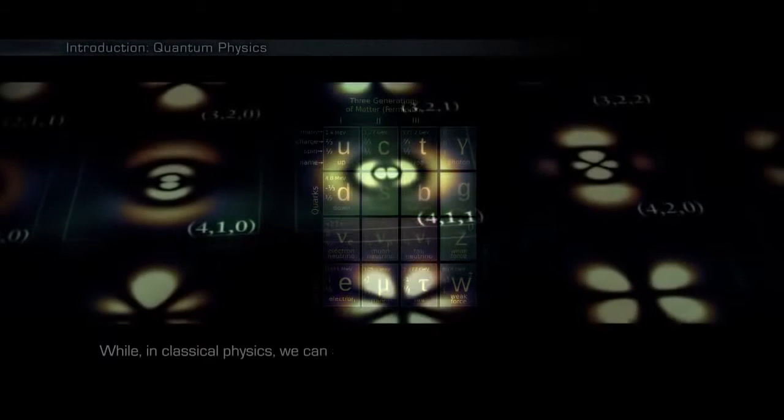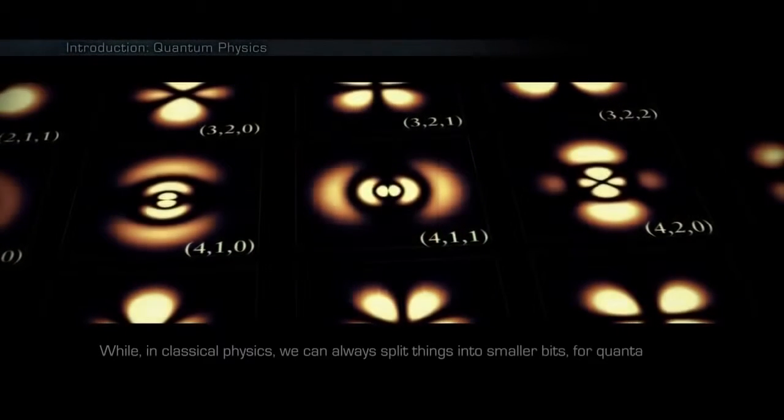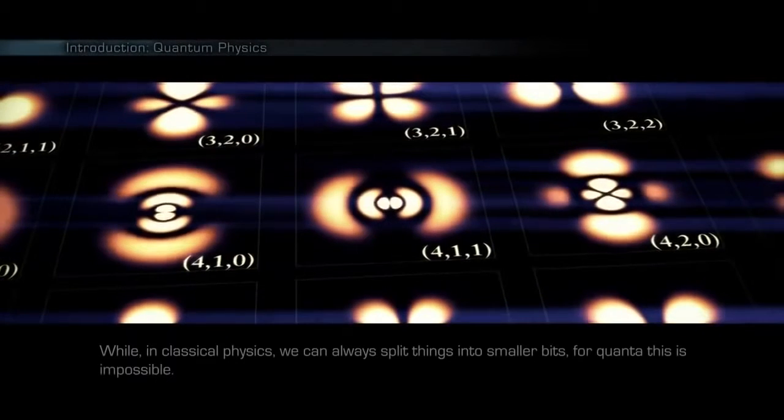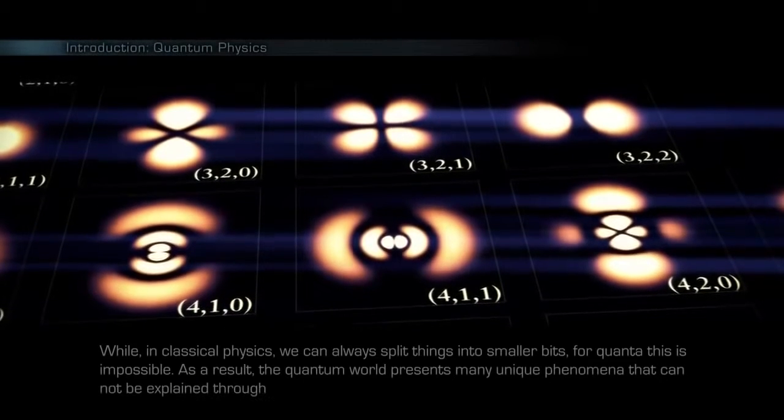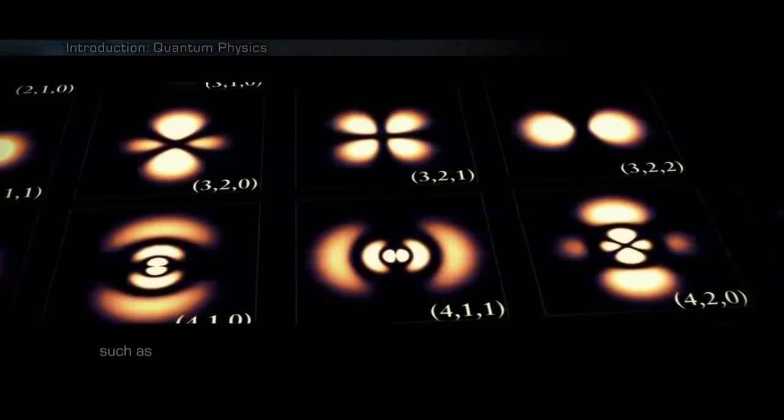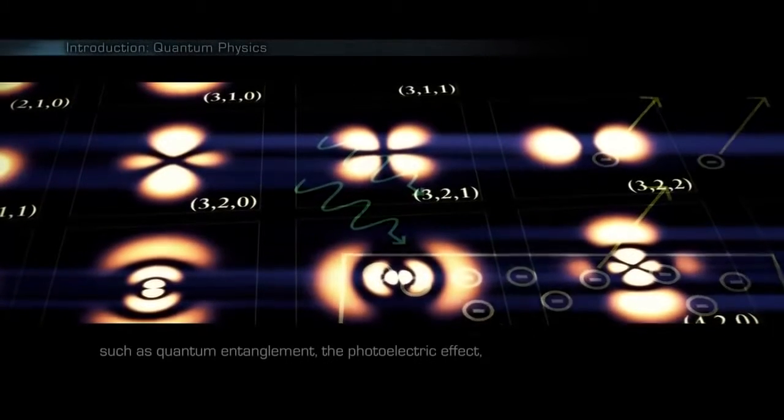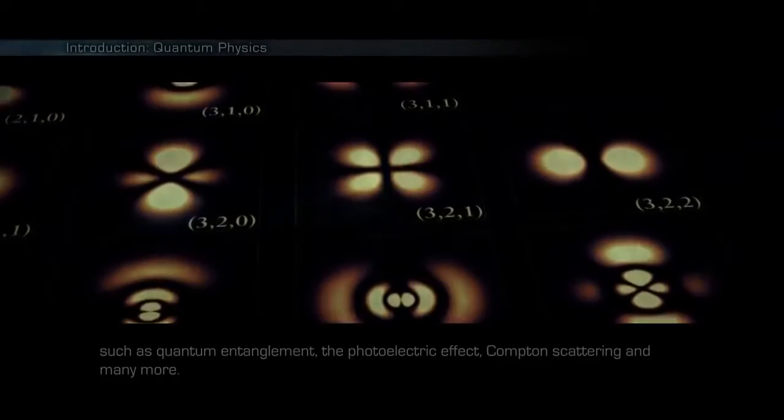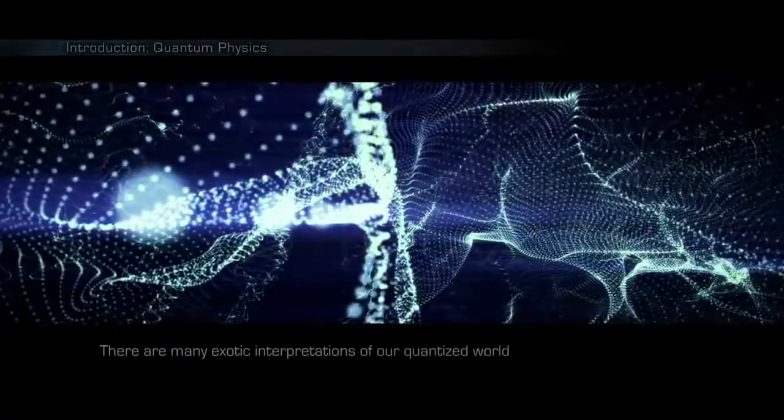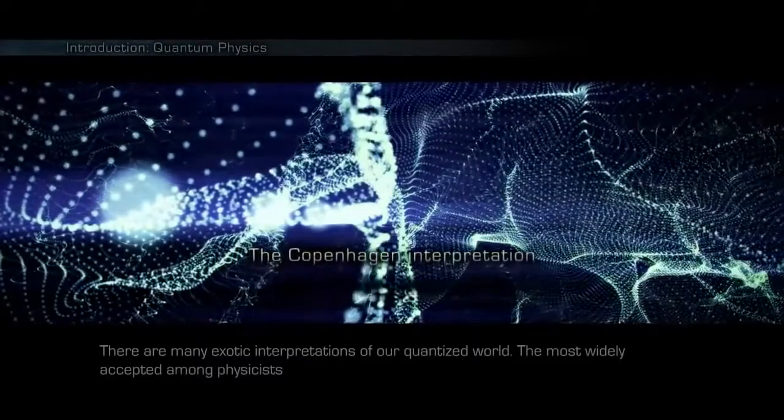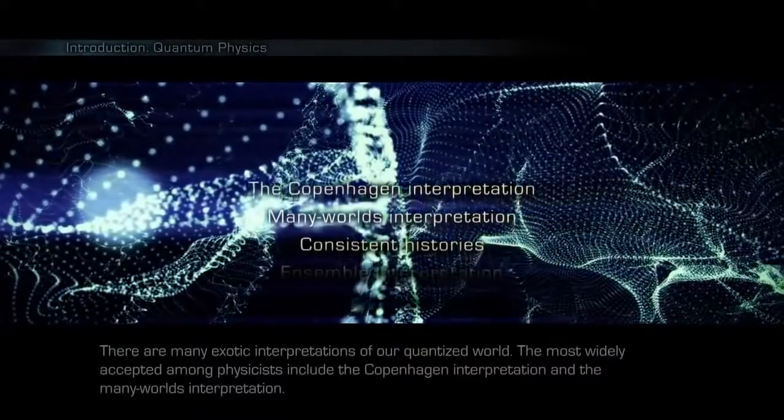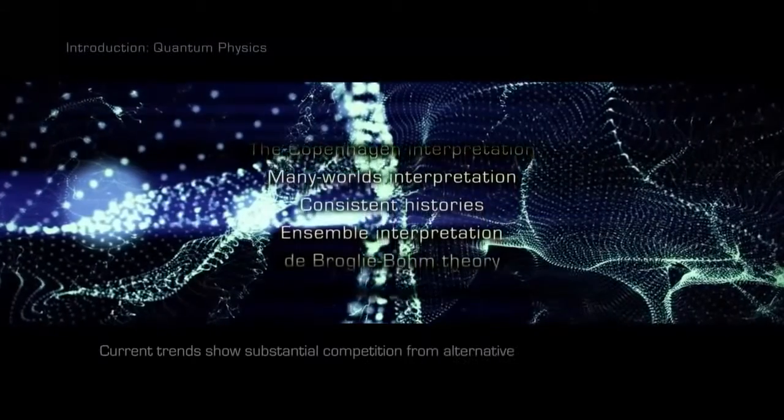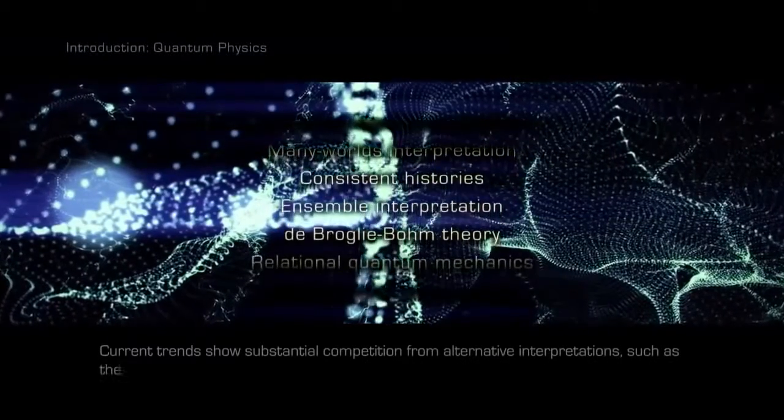While in classical physics we can always split things into smaller bits, for quanta this is impossible. As a result, the quantum world presents many unique phenomena that cannot be explained through classical laws such as quantum entanglement, the photoelectric effect, Compton scattering and many more. There are many exotic interpretations of our quantized world. The most widely accepted among physicists include the Copenhagen Interpretation and the Many Worlds Interpretation. Current trends show substantial competition from alternative interpretations such as the holographic universe.